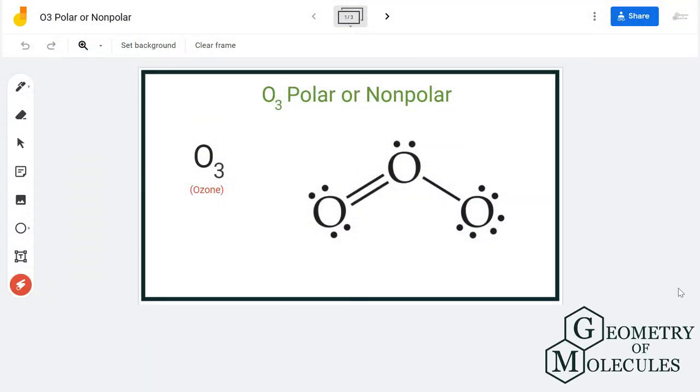Hi guys, today in this video we are going to determine the polarity for the O3 molecule, which is the chemical formula for ozone. To determine its polarity, we will first look at its Lewis structure and its molecular geometry.